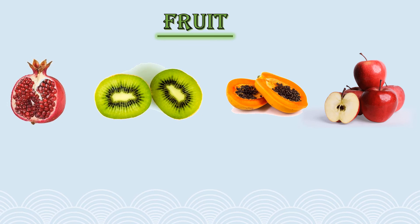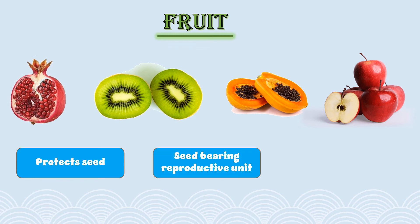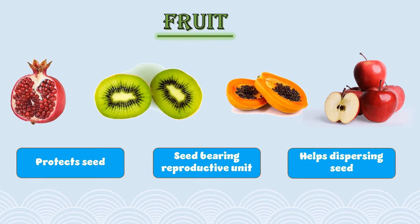Where does the seed go? It goes inside the fruit! So the fruit protects the seed. Fruit is a seed-bearing reproductive unit. It also helps in dispersing the seed — when we or animals eat the fruit, the seeds are left behind and that helps in reproduction, growing another plant. Fruits are also rich in vitamins and minerals.